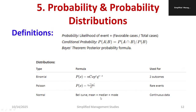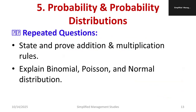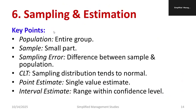Normal distribution has a bell curve where mean equals median equals mode — that is its key characteristic. Also study the Central Limit Theorem with respect to normal distribution. Important questions: state and prove the addition and multiplication rules; explain the binomial, Poisson, and normal distributions with numerical examples.